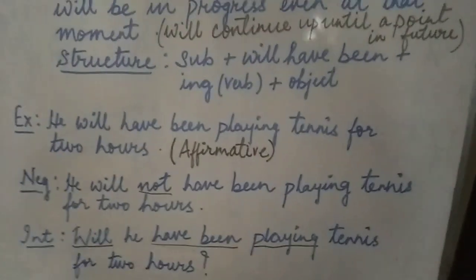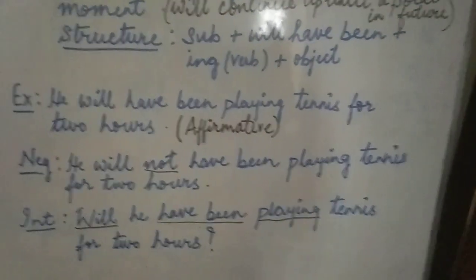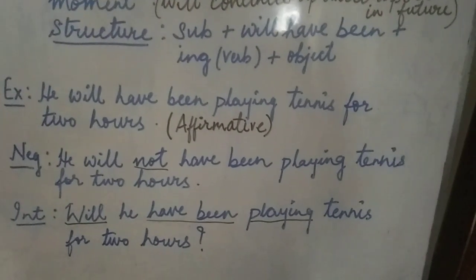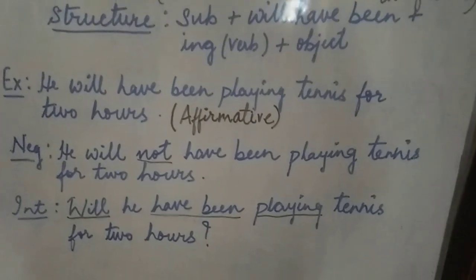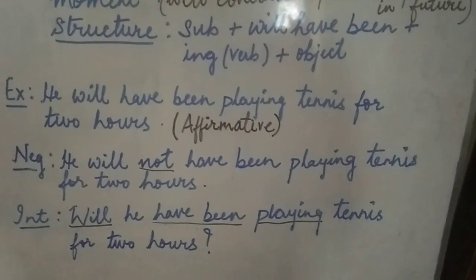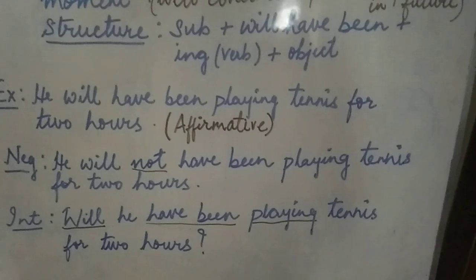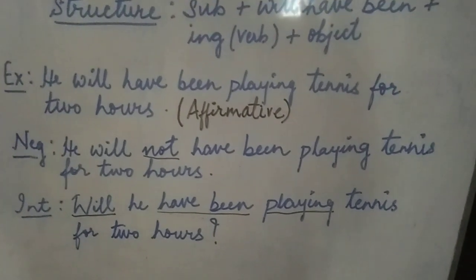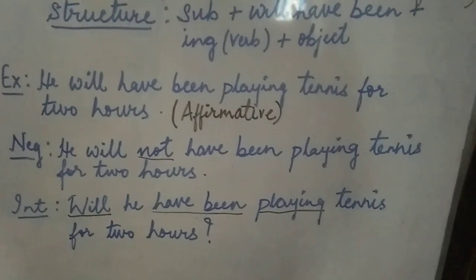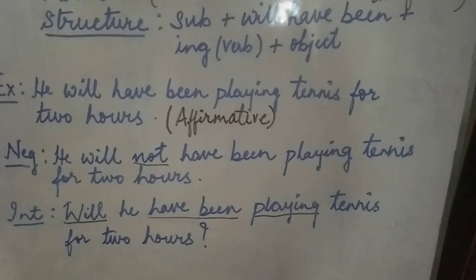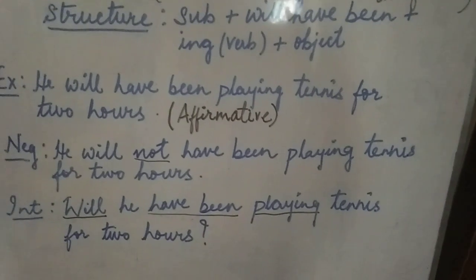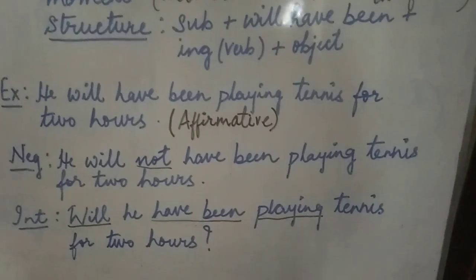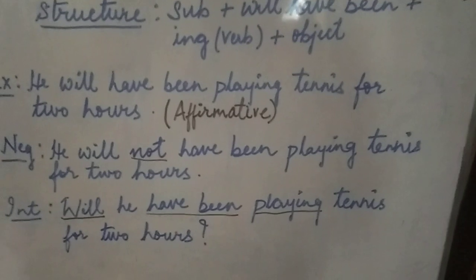Now let's come to the negative sentence. 'Not' will come between the two auxiliary verbs — will not have been playing. So the negative sentence is: He will not have been playing tennis for two hours.